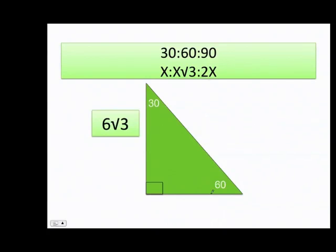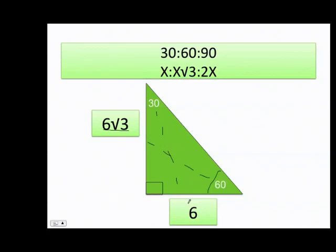Now they give me the value of the 60-degree angle. By the way, the 30 degrees can also be placed here and the 60 degrees can also be placed there — no matter where you place them, they will always follow the ratio. For the 60-degree side the opposite is x times the square root of 3. Therefore the 30-degree side is x, which in this case is 6, and the hypotenuse is 12.